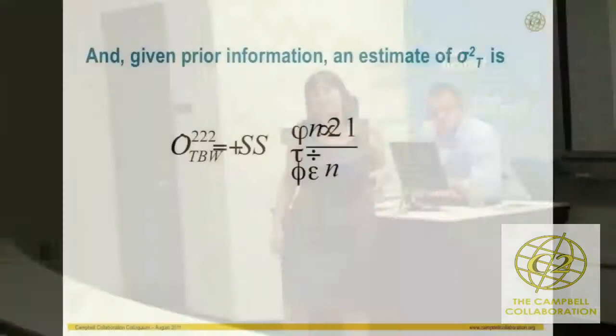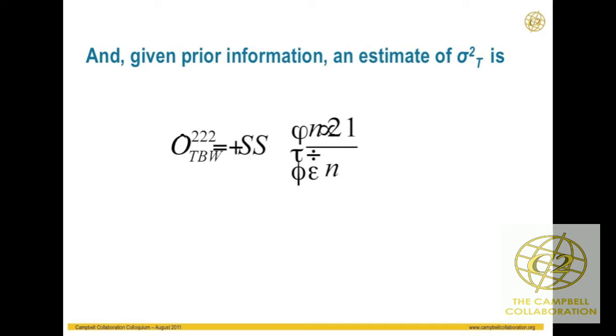So our estimator for sigma-squared-B takes our sampling estimate of the variance of the cluster means and subtracts off the piece that is part of the within-group variation. That little n is our cluster sample size, assuming equal sample sizes within clusters. Given what we've seen, we can also solve for the total variation as the sum of the between and within group sample variances with the sample size included.